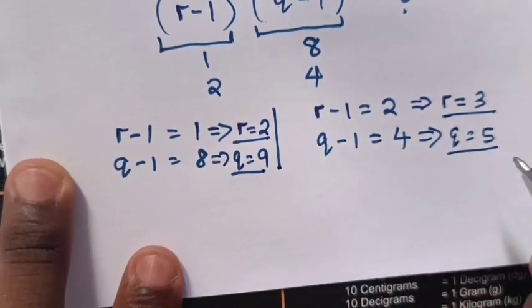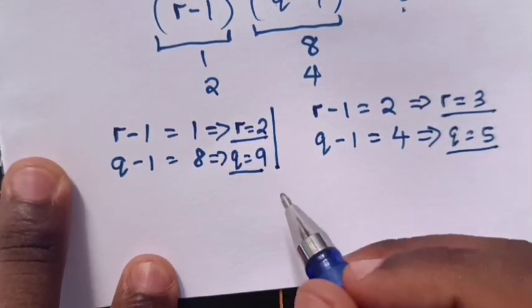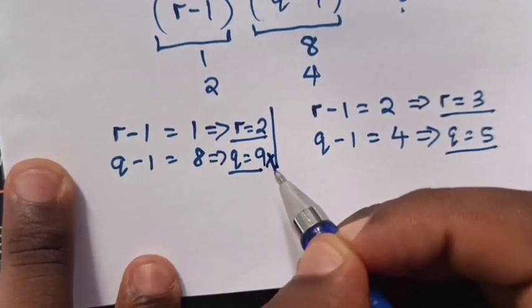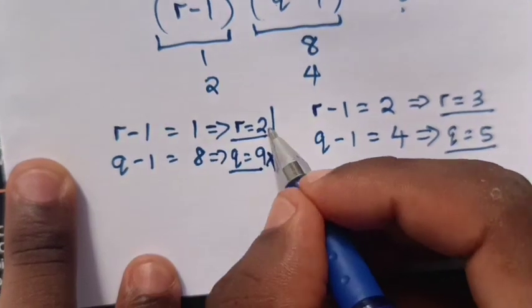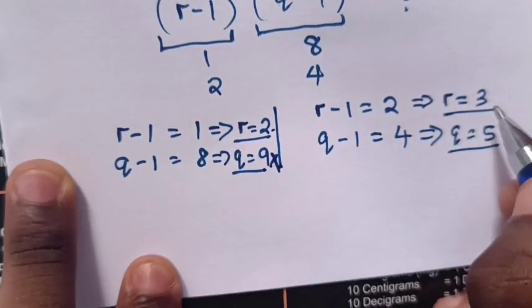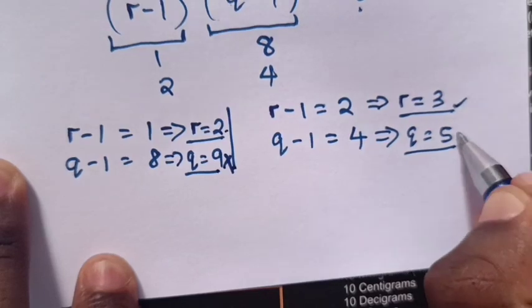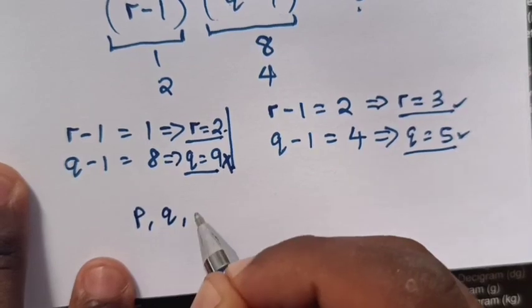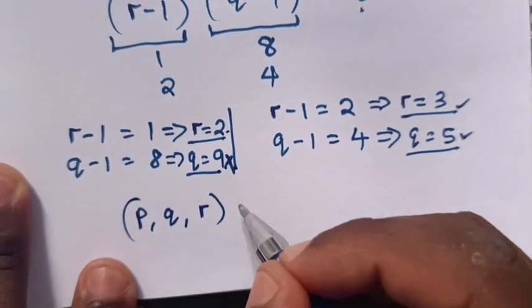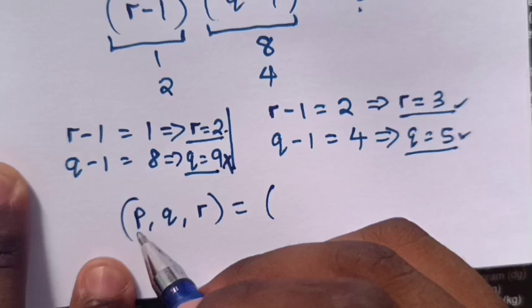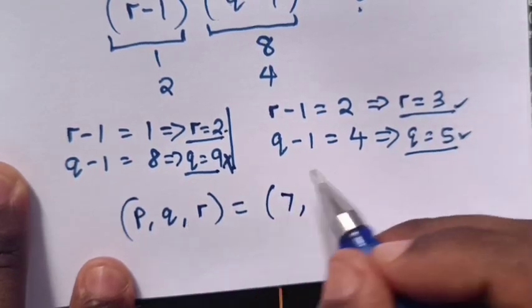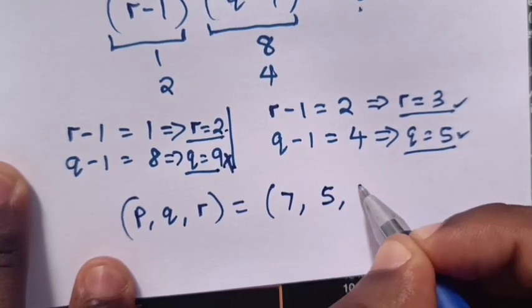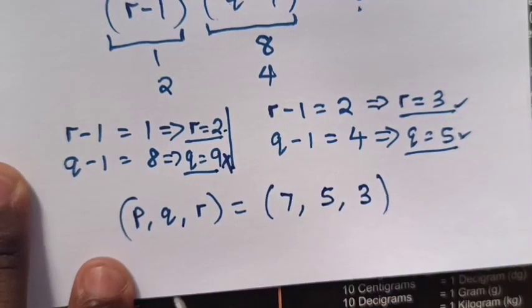So from these answers, Q is not prime. And from R, R is not prime, it's even. So here R is 3 is prime, and here Q is 5 is prime. So P, Q, R equals P is, remember, P is 7 and Q is 5 and R is 3. So this is the value of P, Q, and R.